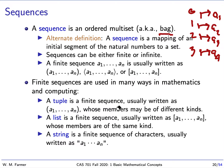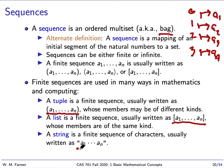We use finite sequences in many ways in mathematics and computing. Three popular uses in computing are: a tuple — a finite sequence written with parentheses, where values can be of different kinds; a list — written with square brackets, where members are typically of the same type; and a string — a finite sequence of characters, written with quotation marks.